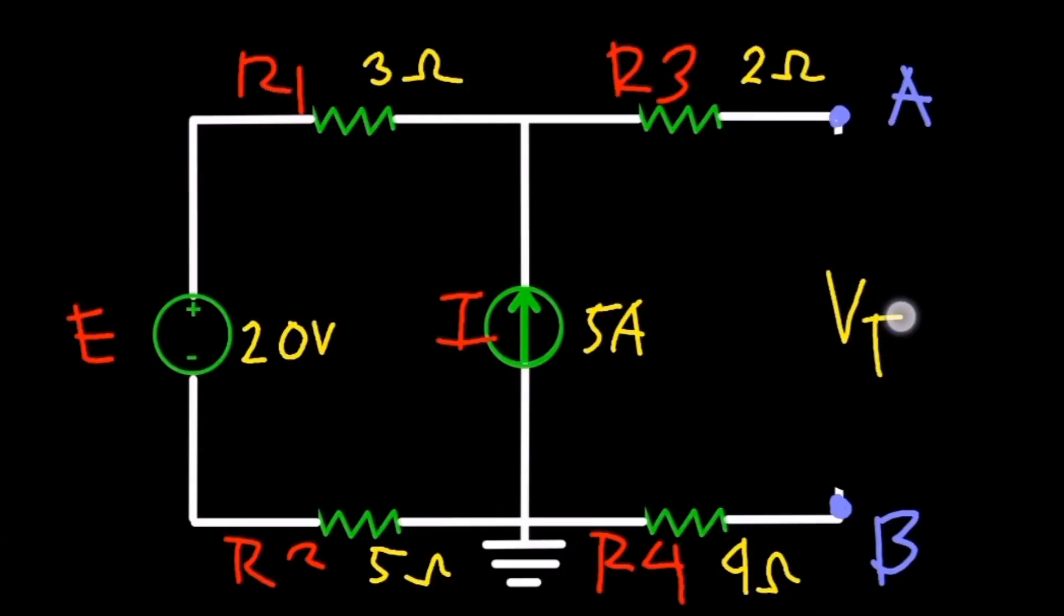Next, we'll determine Thevenin's equivalent voltage Vth. Begin by opening the load RL. Mark point X here and denote the voltage at this point as Vx. Let's also consider the direction of current.